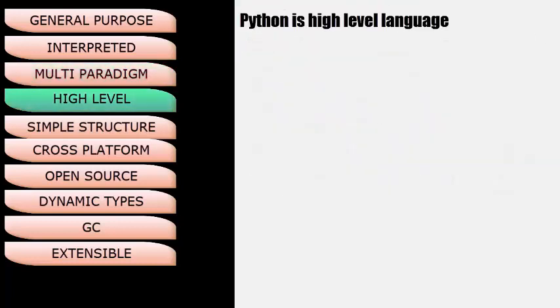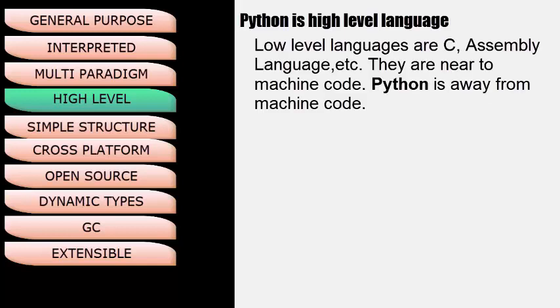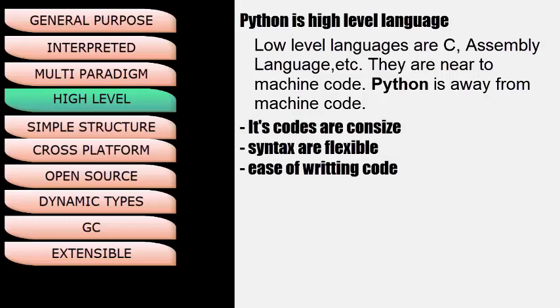Next, Python is a High-Level Language. Low-level languages are near to machine code, like C or assembly language. Python is away from machine code. Some other reasons to call it a high-level language are that its code is concise, syntax is flexible, and it offers ease of writing code.